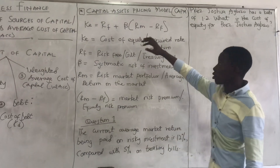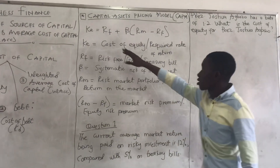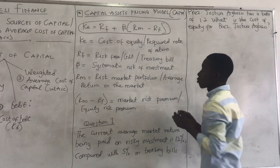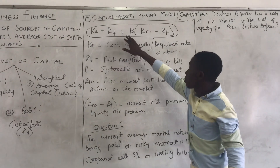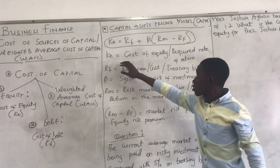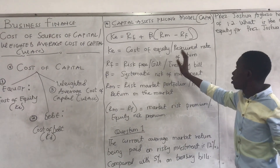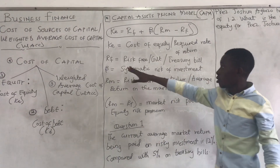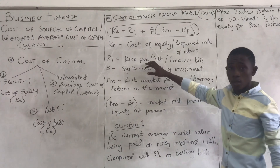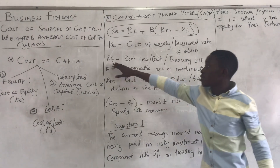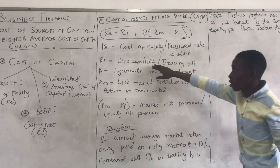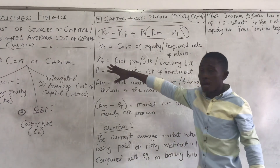So with the Capital Asset Pricing Model, here is the formula. K is cost of equity equals RF plus beta times (RM minus RF). K is the cost of equity — it's the same as the required rate of return. RF is risk-free. Sometimes you see 'gilt' or 'jilt' — it's the same thing as RF. You might also see 'treasury door' — it's still the same as RF.